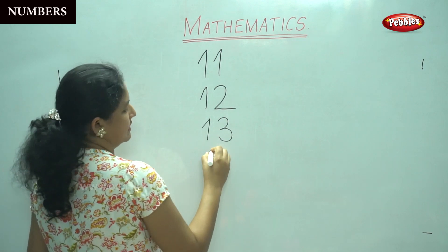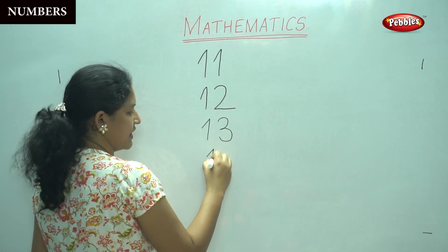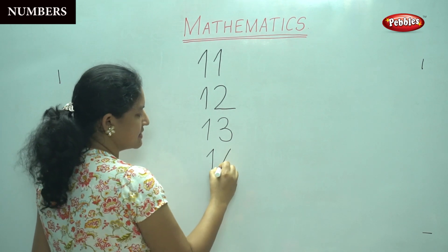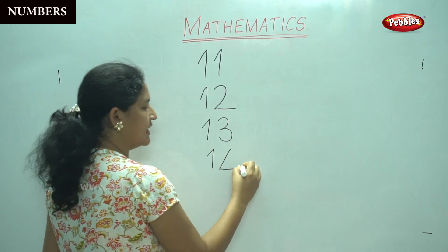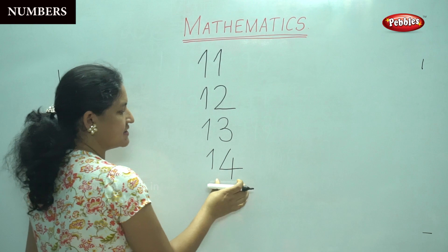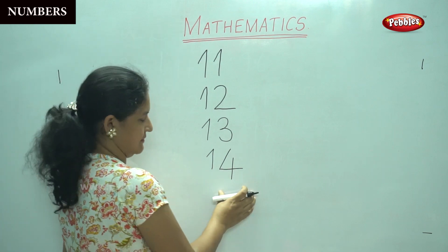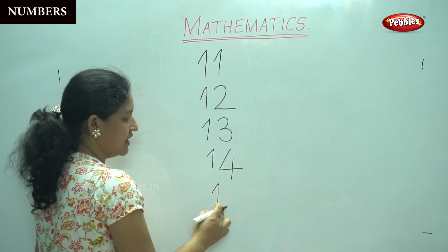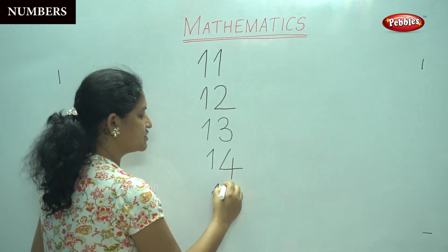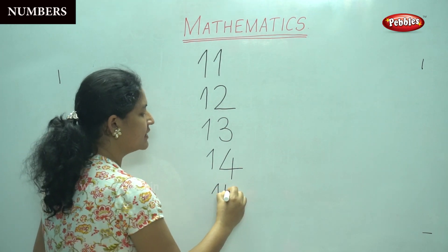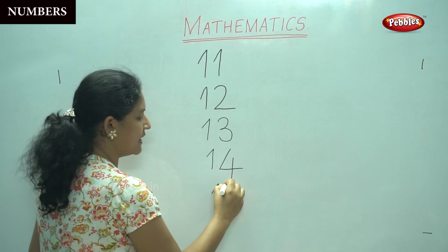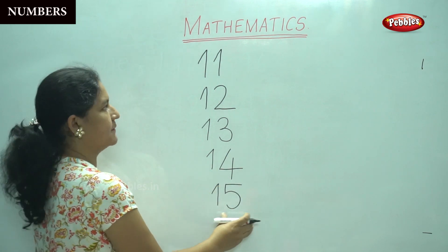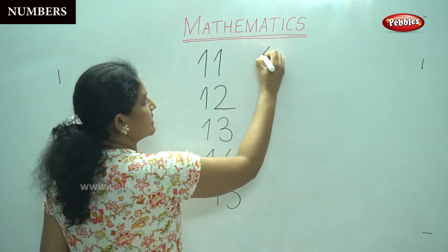The next number: slanting line, straight line, one slanting line, sleeping line, straight line. This is number 14. Slanting line, straight line, number one, straight line, a curve and a sleeping line. This is number 15.